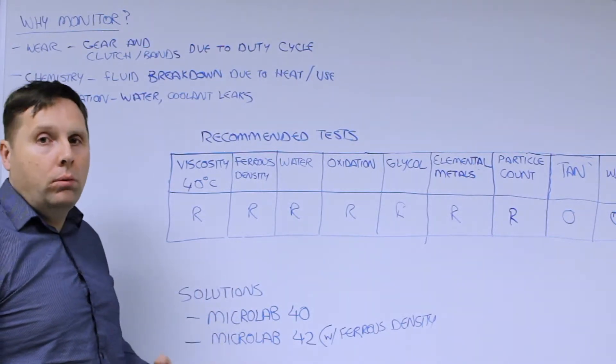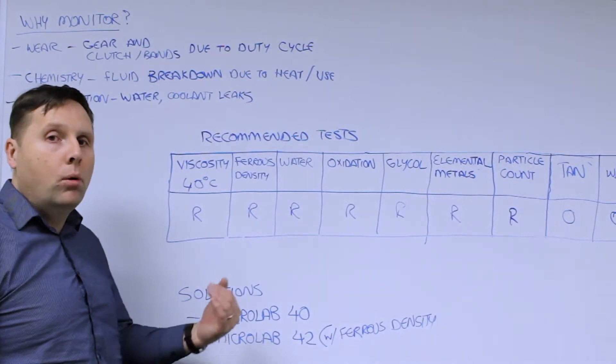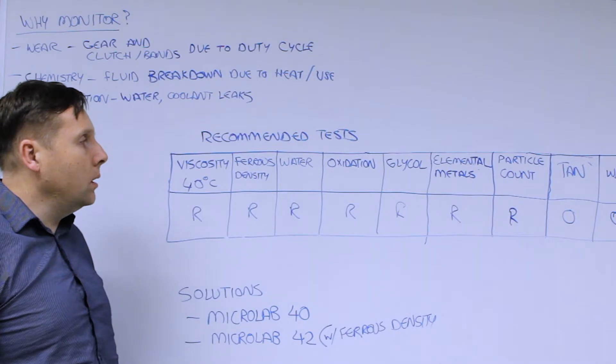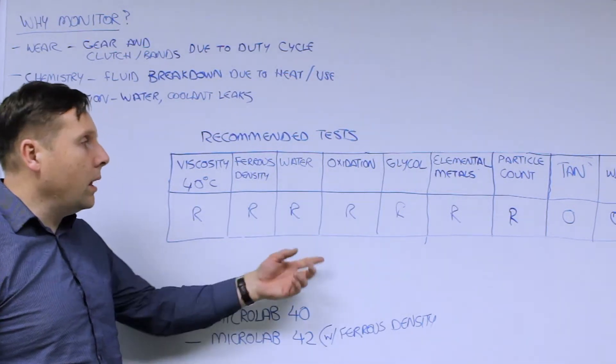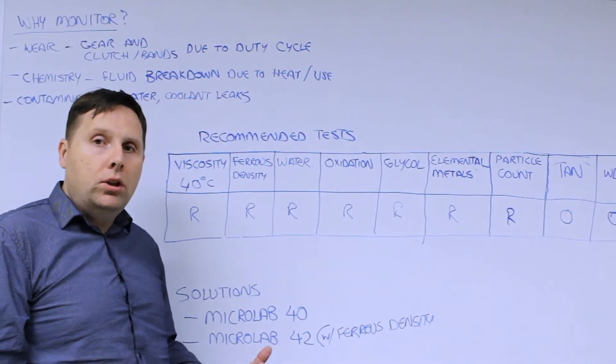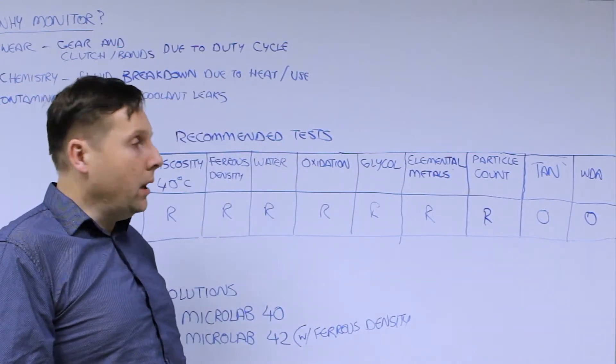Water content, always find out what's going there. Usually 2500 ppm or below is considered normal. Anything above that can be abnormal. Oxidation to indicate the level of degradation that's present. We recommend it being run on a regular basis. We also recommend glycol should be done because it can give you an indication if you have an intercooler leak present.